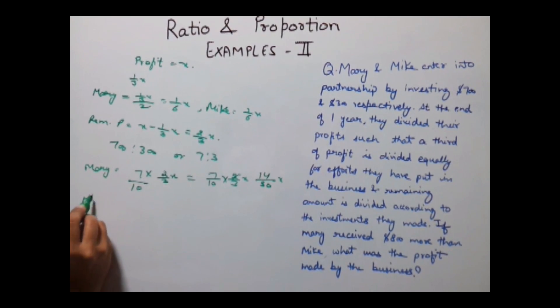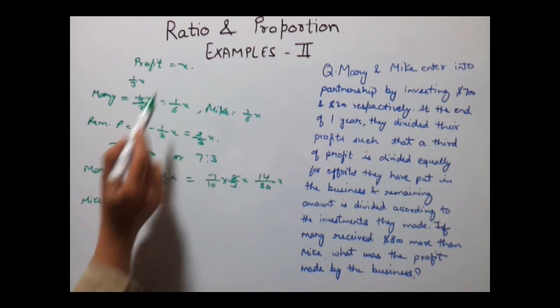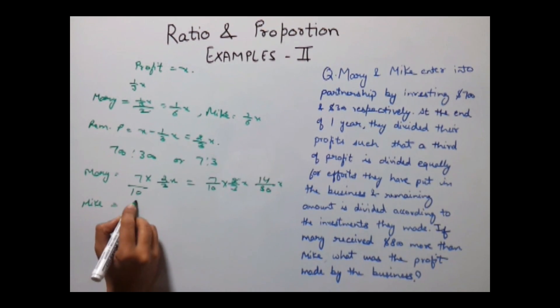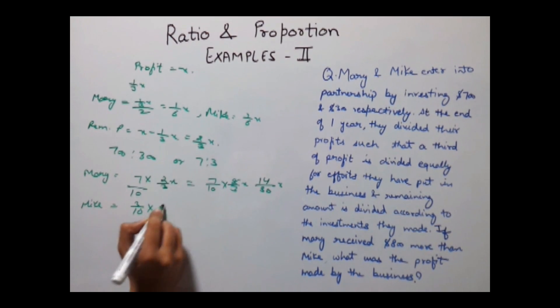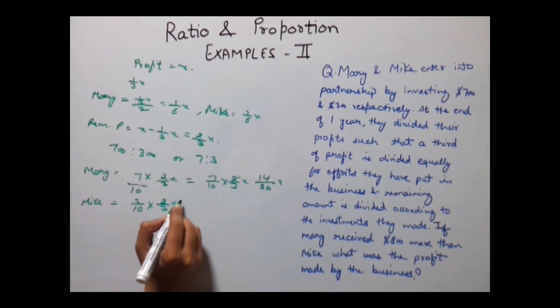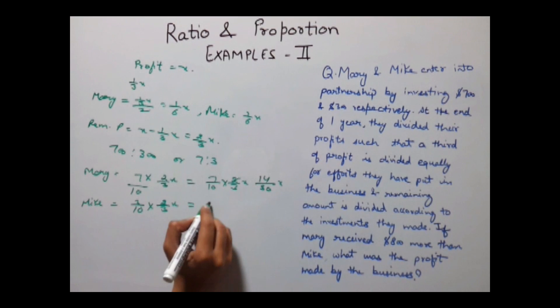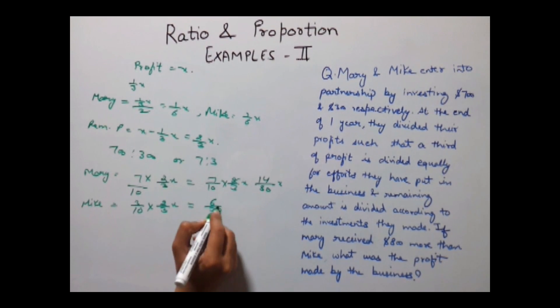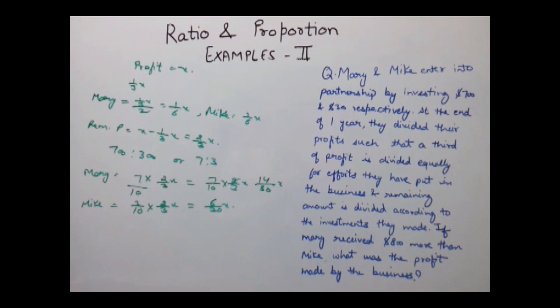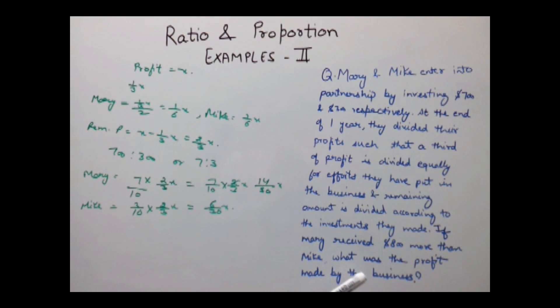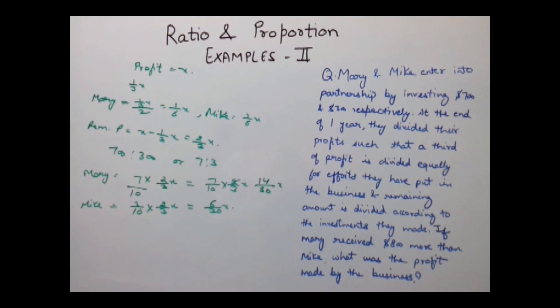Similarly, Mike's profit from this remaining profit would be 3/10 into 2/3 X which equals 6/30 X. Now, it is given that Mary received $800 more than Mike.